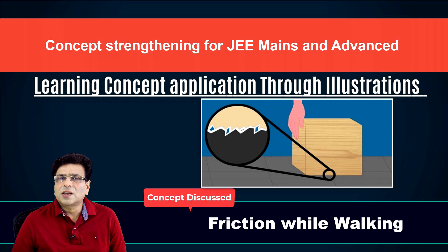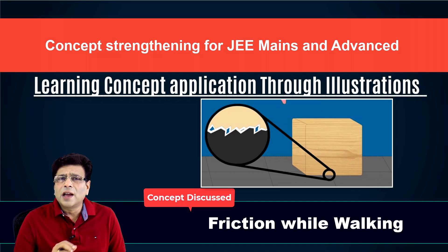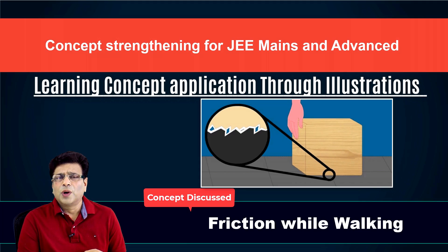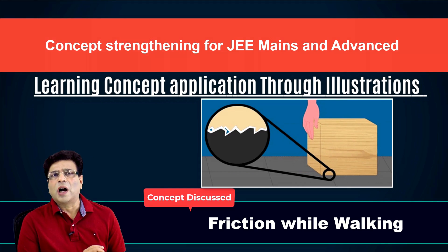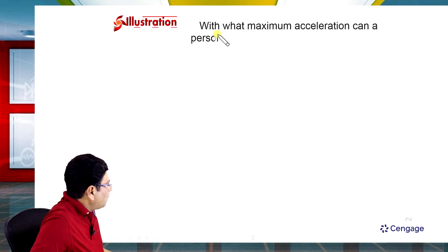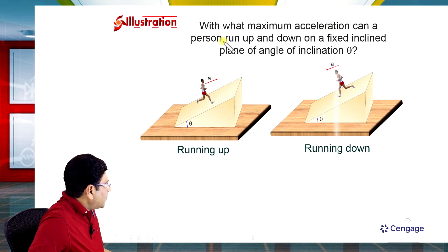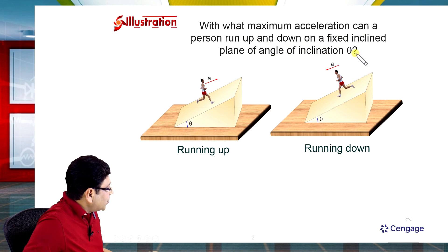In the coming section, we will discuss the role of friction while walking and running. We will discuss and learn some selected illustrations and practical cases. Let's go to the illustration part. In this illustration, it is given: with what maximum acceleration can a man run up and down on a fixed inclined plane of angle of inclination theta?